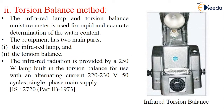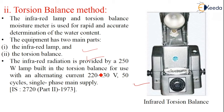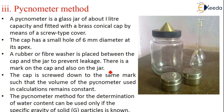Coming to the next method, that is the torsion balance method. The infrared lamp and the torsion balance moisture method is used for rapid and accurate determination of water content. This equipment has two main parts: one is the infrared lamp and the other is the torsion balance. The infrared radiation is provided by a 250-watt lamp built into the torsion balance, for use with an alternating current of 220 volts at 50 cycles. Single-phase main supply has to be used. This method is followed by IS 2720 part 2, 1973.